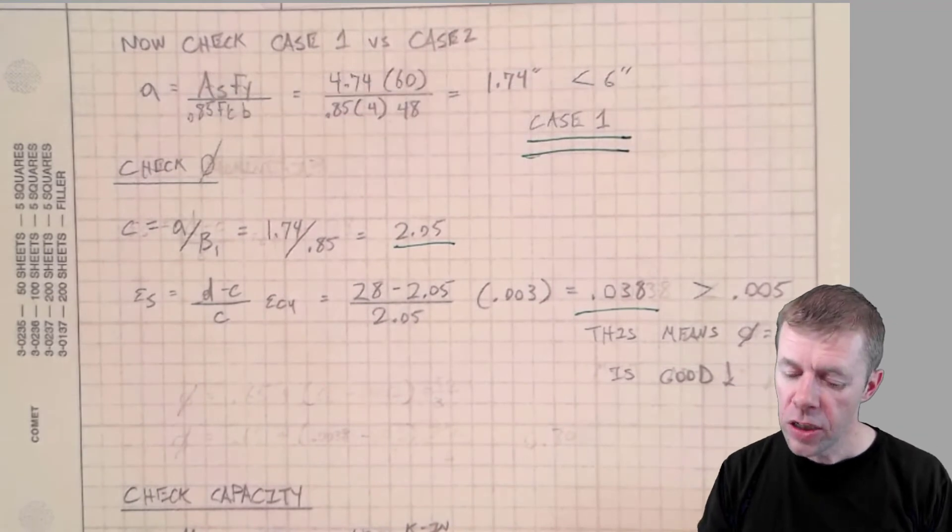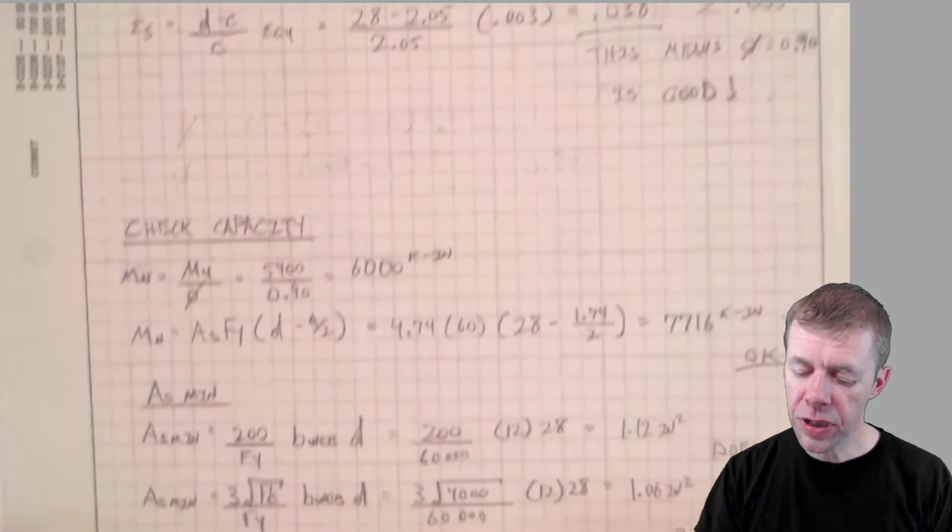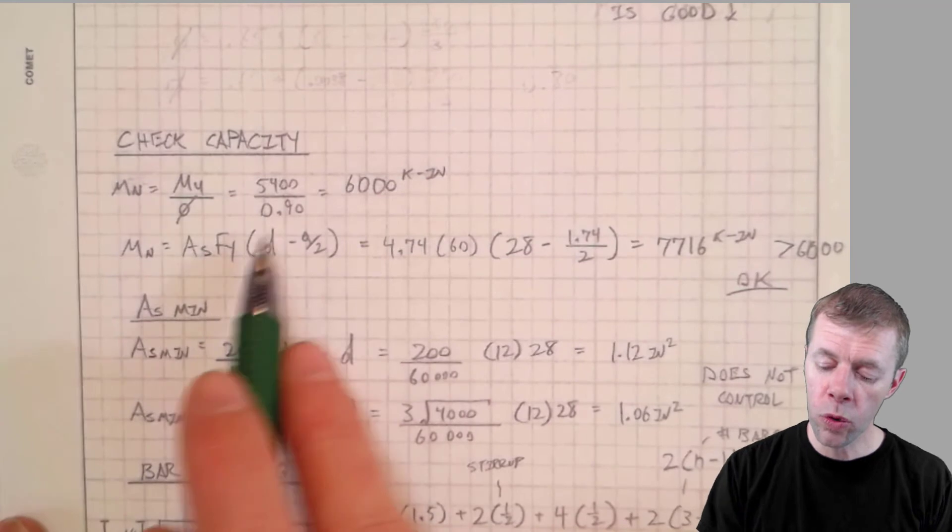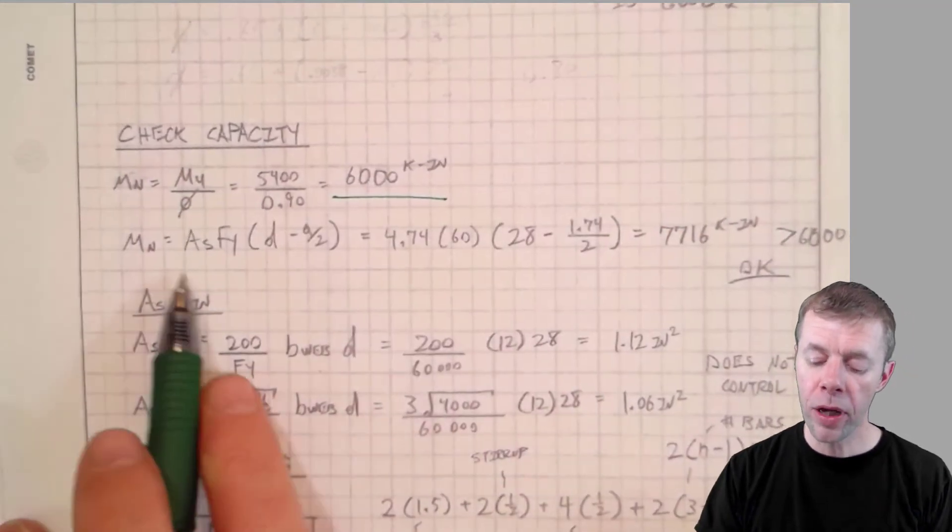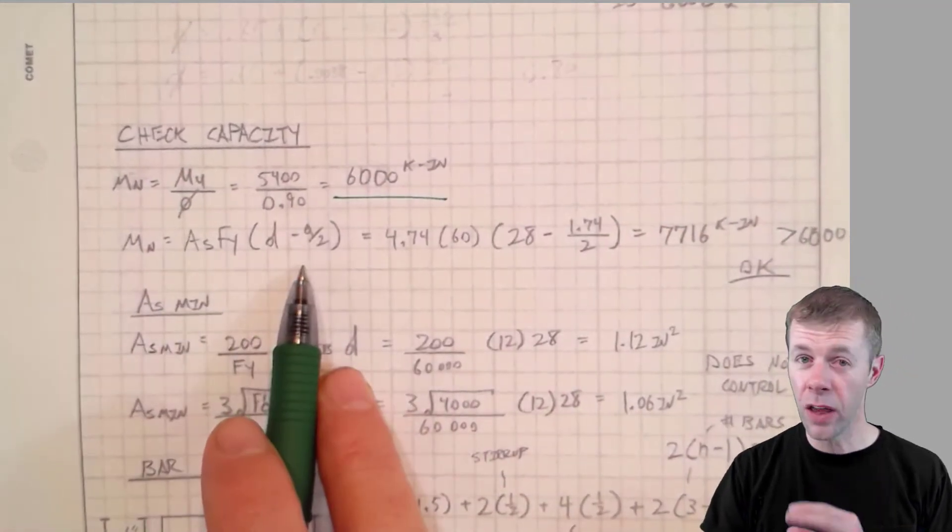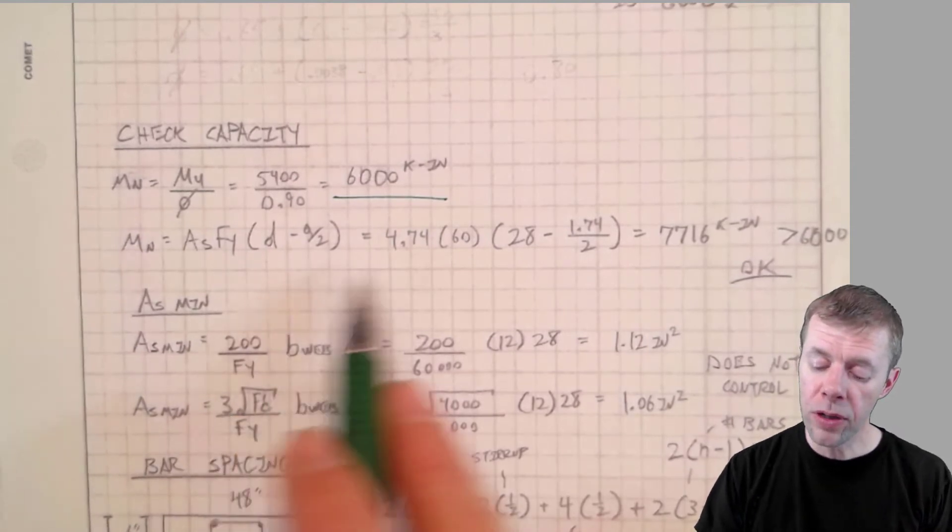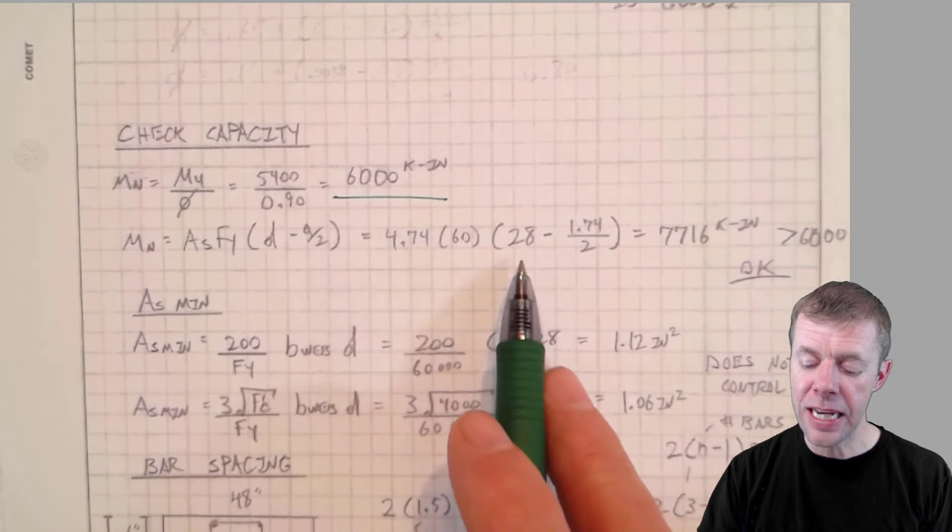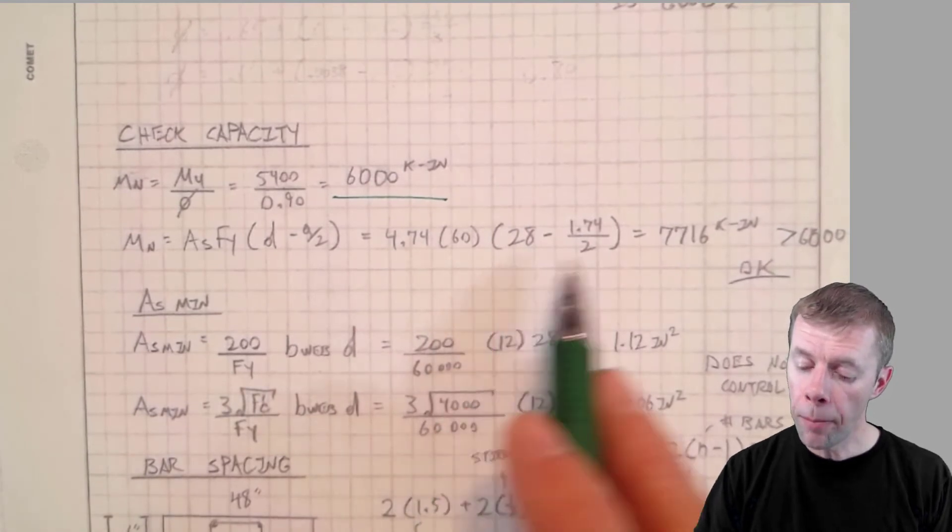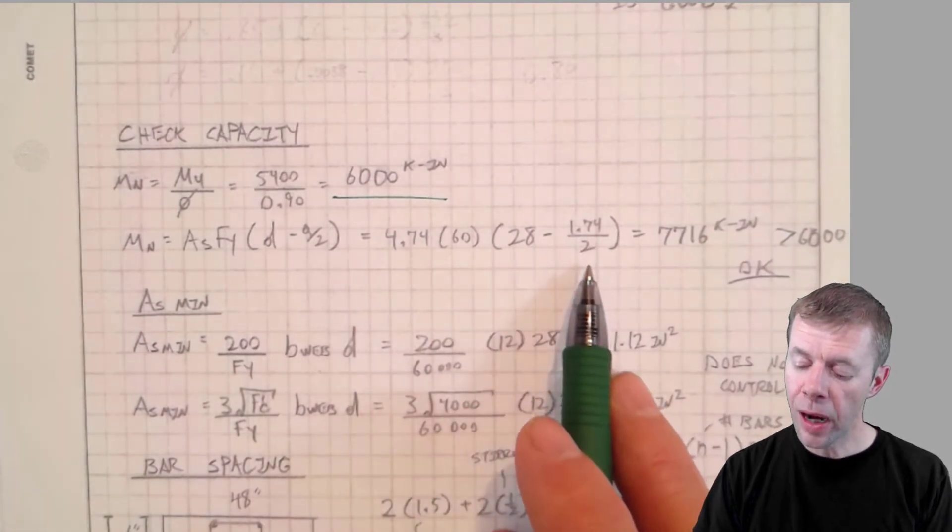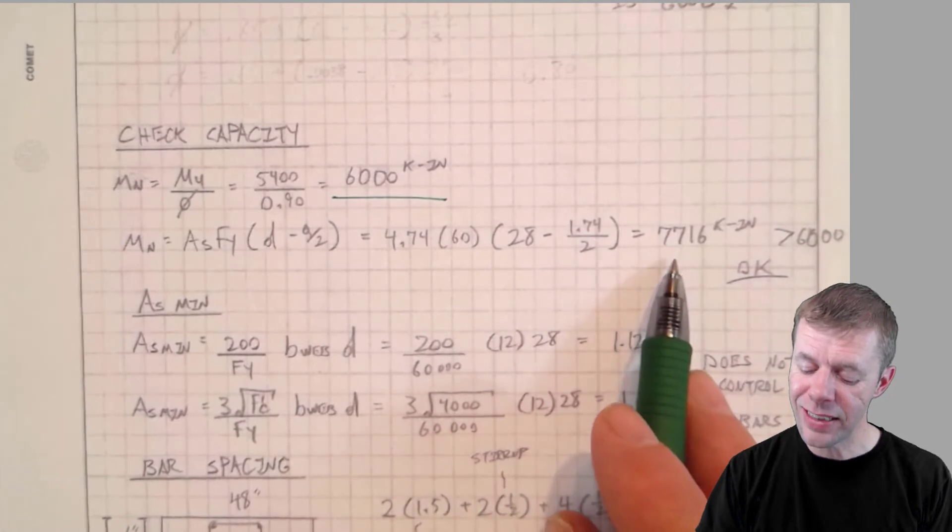Moving on. So we get to check our capacity now. We know we're shooting for 6,000 kip inches. We get to plug into our real equation now. None of this is assuming 0.9 D. This is the real check. 4.74, 60 KSI. My D is 28 inches. 1.74 divided by 2. I get 77.16.